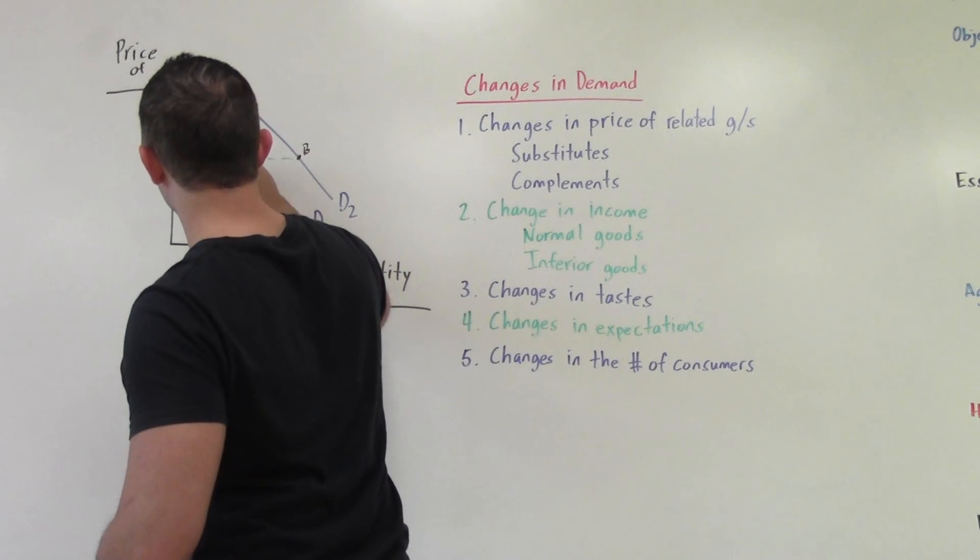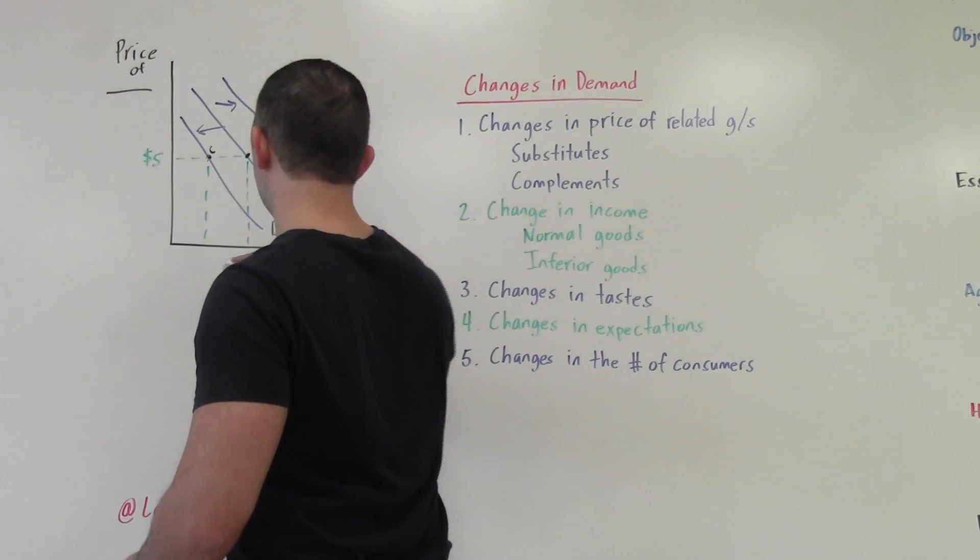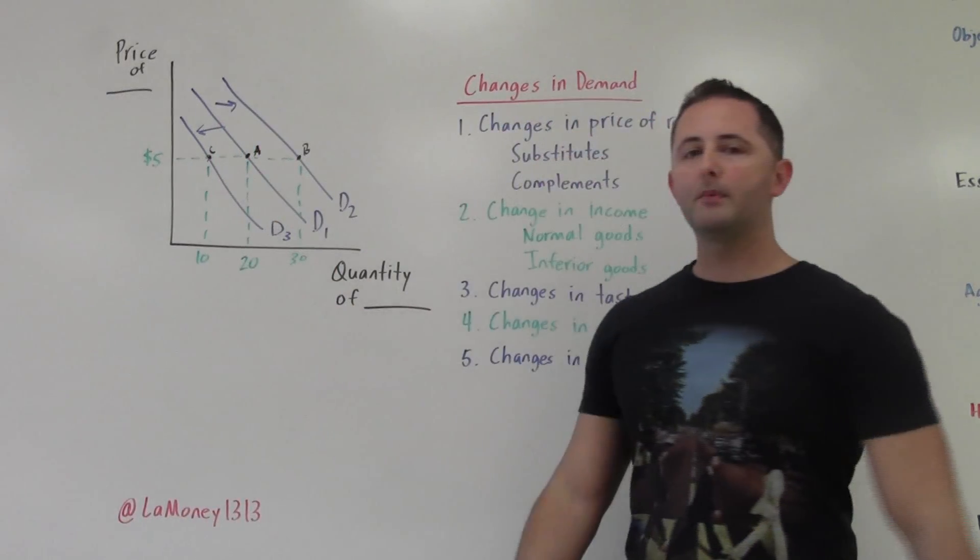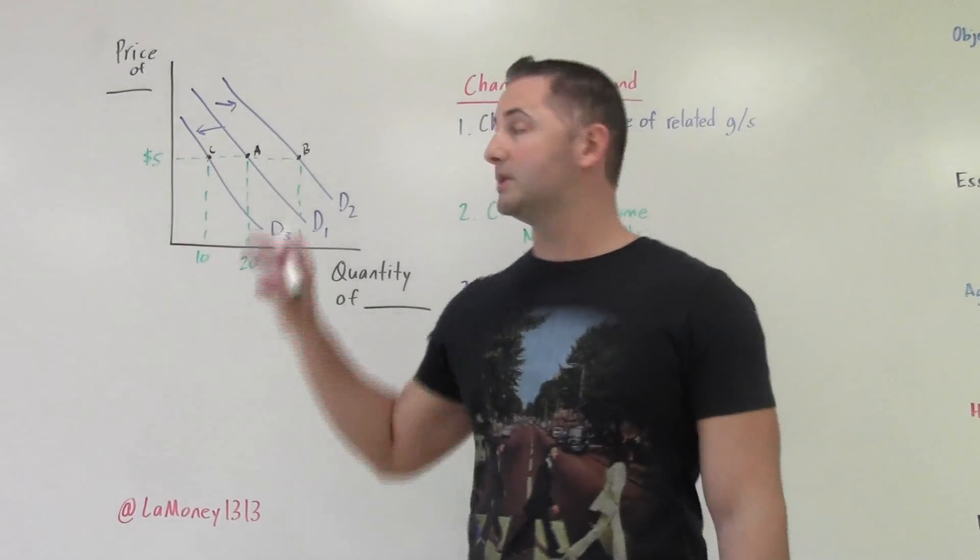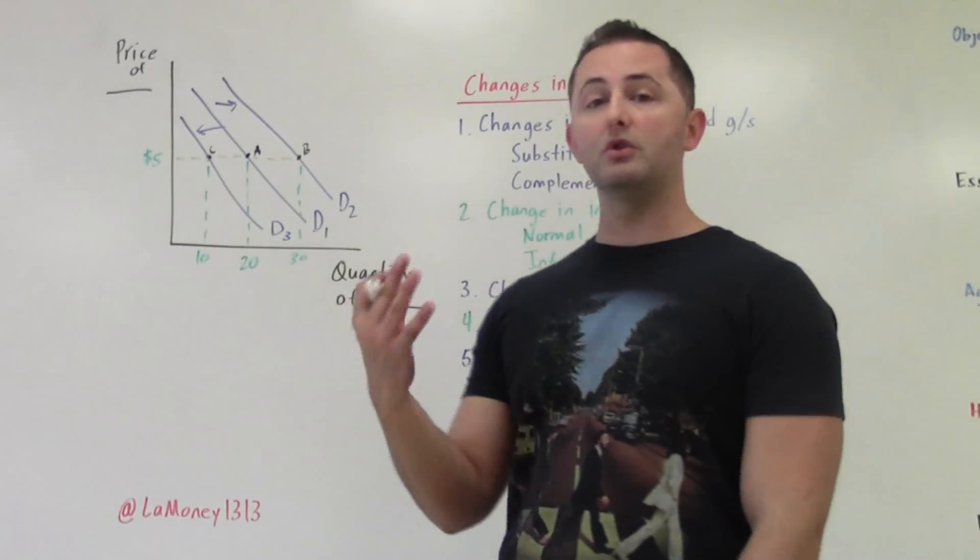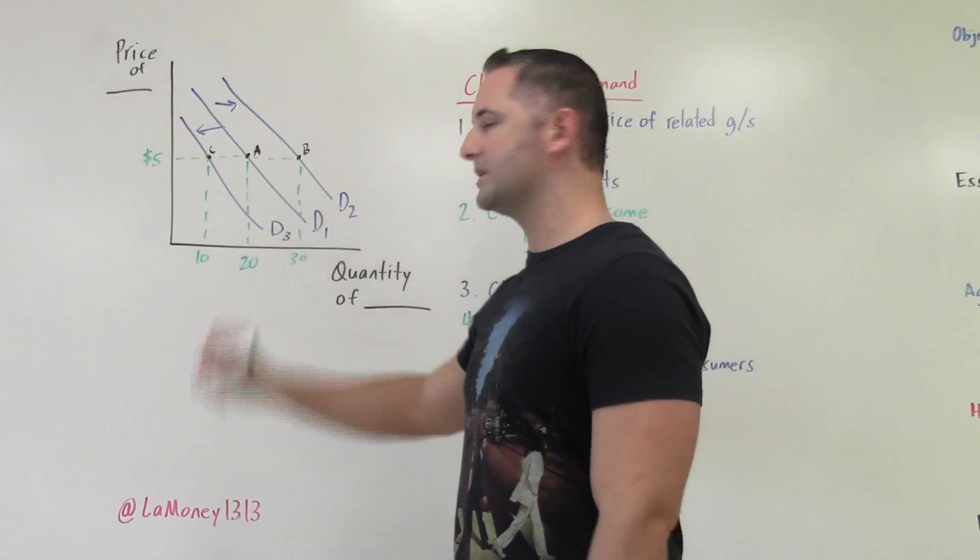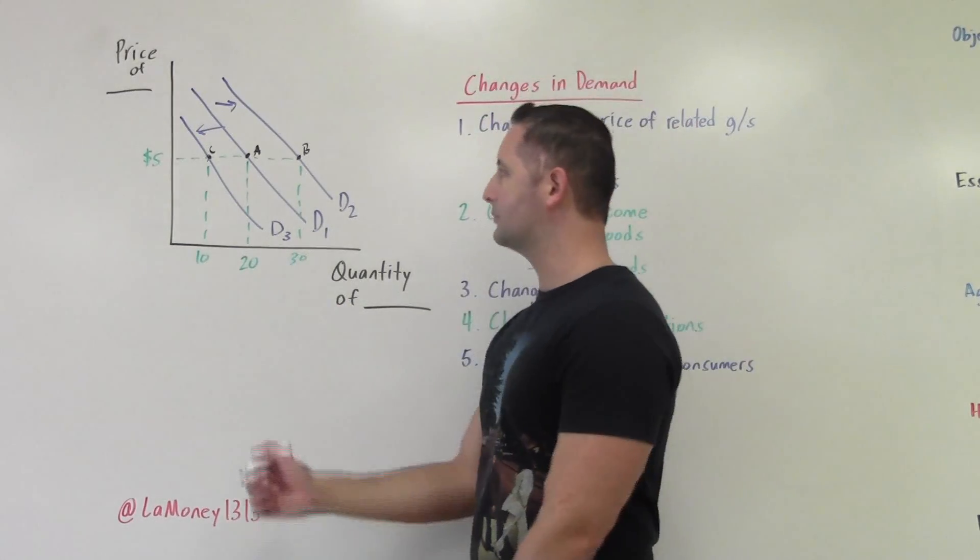So what has changed? Well, the quantity for each one of these has changed. And I'm just making these up using numbers. Typically, when you draw supply and demand models, you aren't always going to use numbers. A lot of times you're going to use variables. And you use P to represent price, and you use Q to represent quantity. So it's usually pretty simple.